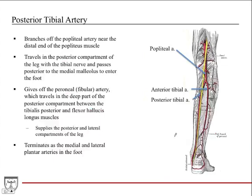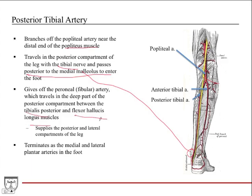The posterior tibial artery branches off the popliteal artery near the distal end of the popliteus muscle and travels in the posterior compartment with the tibial nerve. It passes posterior to the medial malleolus — an important spatial relationship. It gives off the peroneal (fibular) artery, which travels in the deep part of the posterior compartment between the tibialis posterior and the flexor hallucis longus, supplying the posterior and lateral compartments.